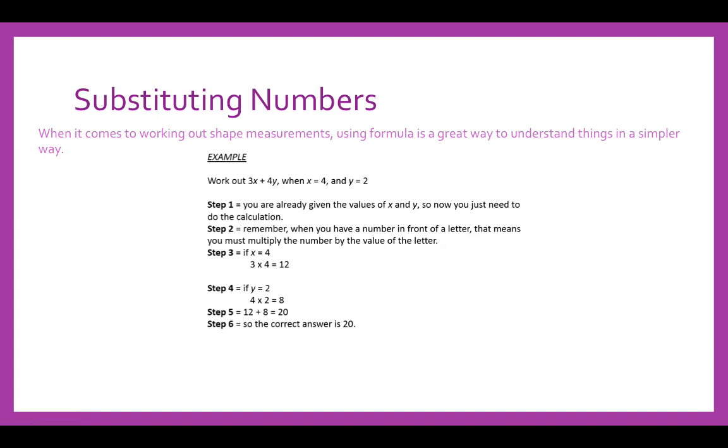Substituting numbers. When it comes to working out shape measurements, using formulas is a great way to understand things in a simpler way. Work out 3x plus 4y, when x equals 4 and y equals 2. You're already given the values of what x and y are, so now you just need to do the calculation. Remember, when you have a number in front of a letter, that means you must multiply that number by the value of the letter. If x equals 4, so 3 times 4 would give you 12. If y equals 2, you would have 4 times 2 would give you 8. Then you would add these together because it is an addition calculation. So it would be 12 plus 8 equals 20. The correct answer is 20.